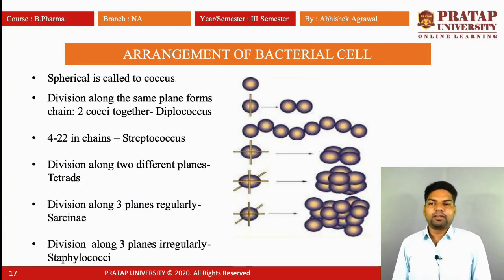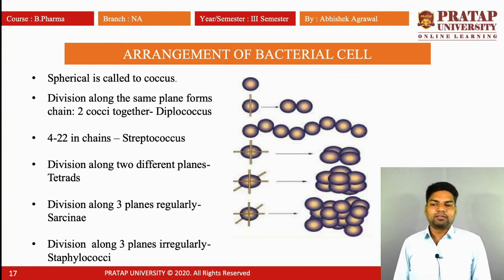To summarize the arrangement of bacterial cells: a spherical cell is called a coccus. Two cocci together, divided in the same plane, is called diplococci. A chain of four to twenty-two cells is called streptococci. Division along two different planes forms tetrads. Division along three planes regularly forms sarcinae, and division along three planes irregularly forms staphylococci.